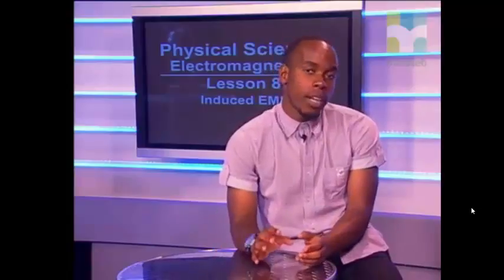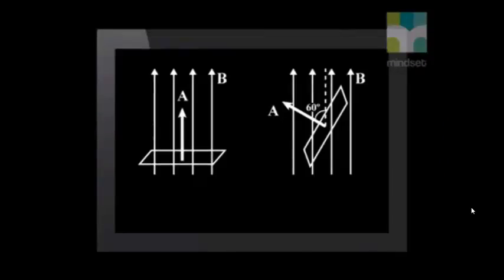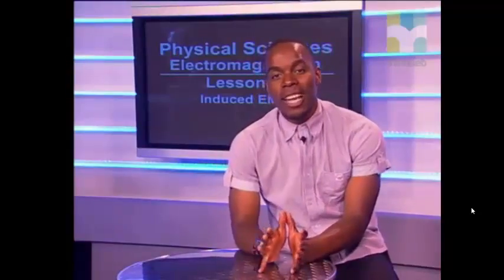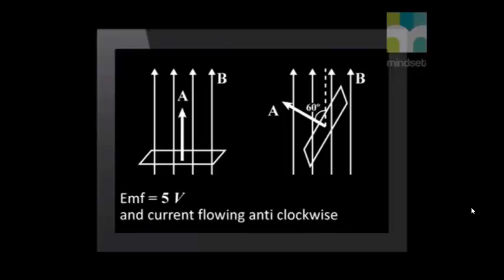To determine the direction of the current, we first need to determine the direction of the change in magnetic flux. From the diagram, we see that the magnetic field lines, B, move in the upward direction. Because we rotated the square so that it is no longer perpendicular to the field lines, we decreased the magnetic flux. Since the magnetic flux changed by negative 20 Weber, this is equivalent to a flux change of 20 Weber in the downward direction. The direction of the current must be such that it opposes the downward change in flux. In other words, the current must have an upward direction. Point the thumb of your right hand upward and curl your fingers; as you look down on them, they curl in an anti-clockwise direction. So the induced EMF is 5 volts, and the induced current is in an anti-clockwise direction in the square.